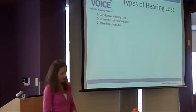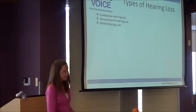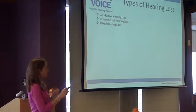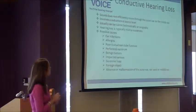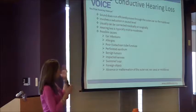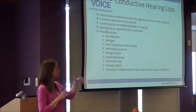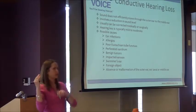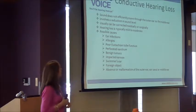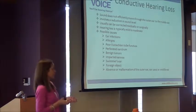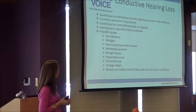There are three different types of hearing loss: conductive hearing loss, sensorineural, and mixed. Conductive hearing loss affects the outer ear and the middle ear — something is obstructing sound from going into the ear. It usually can be corrected medically or surgically, and the hearing loss is typically mild to moderate.